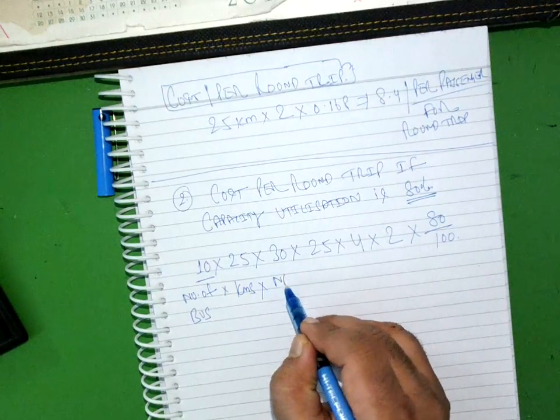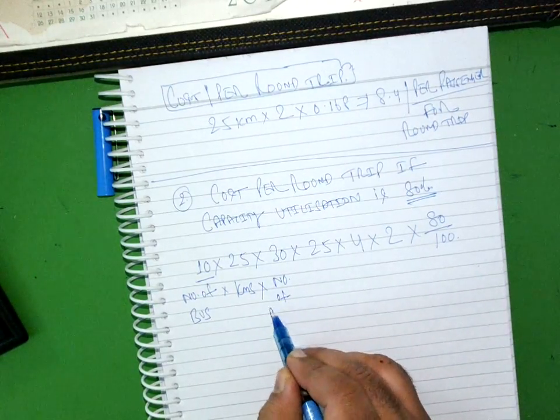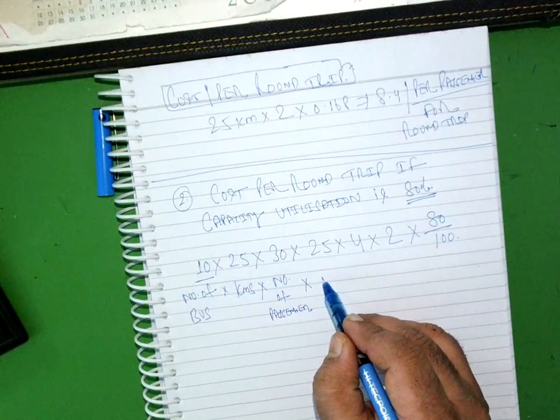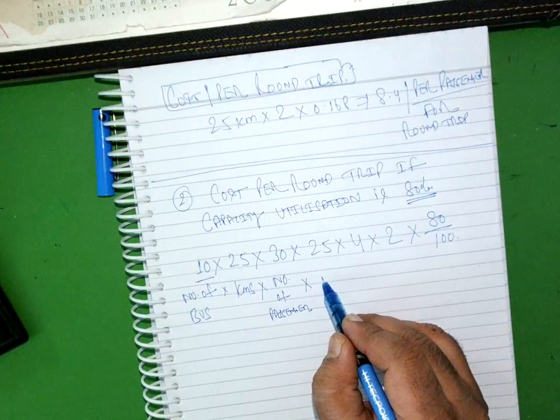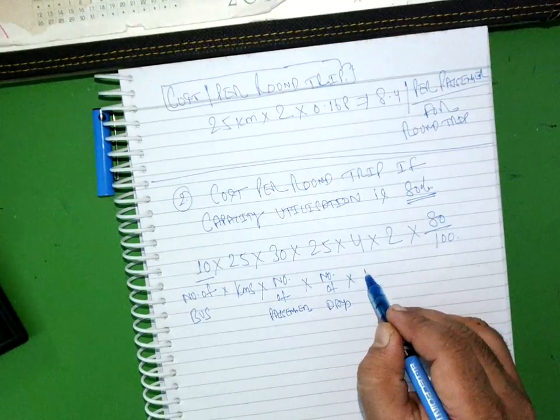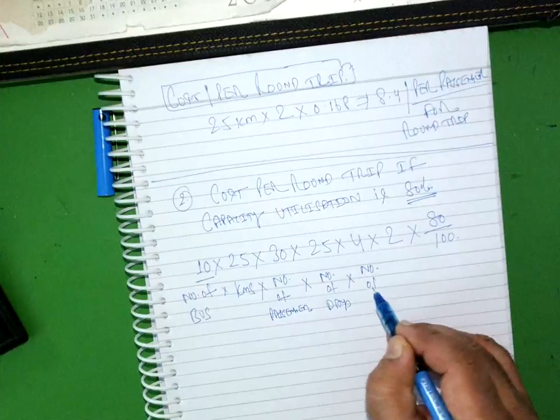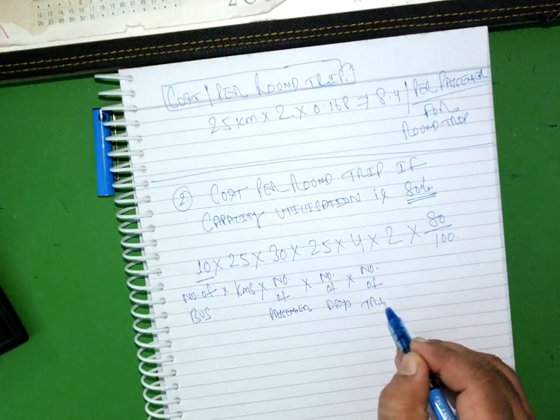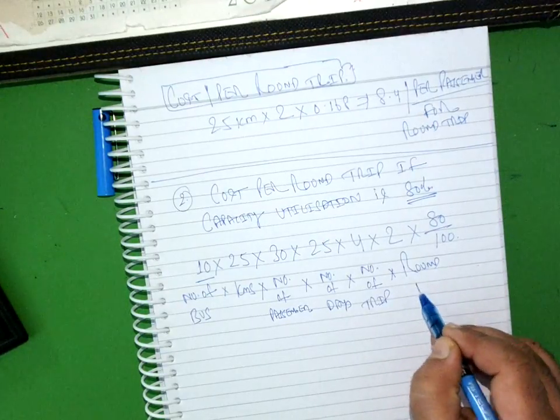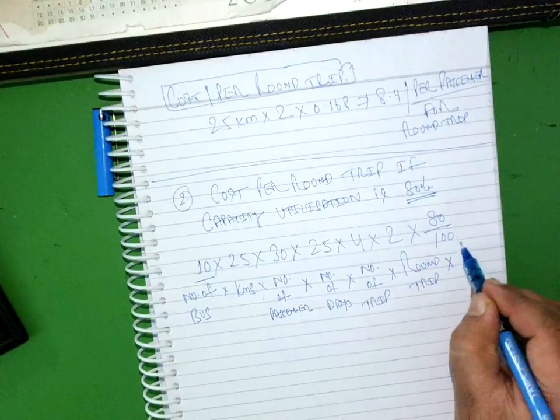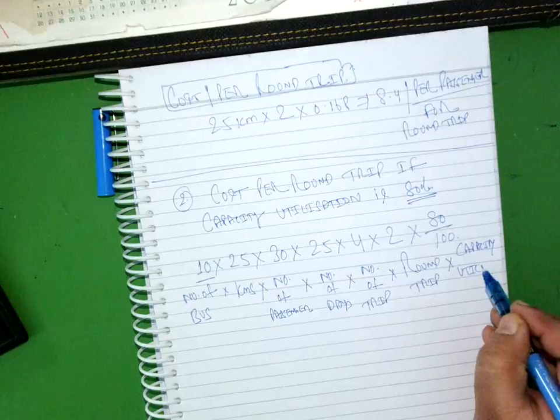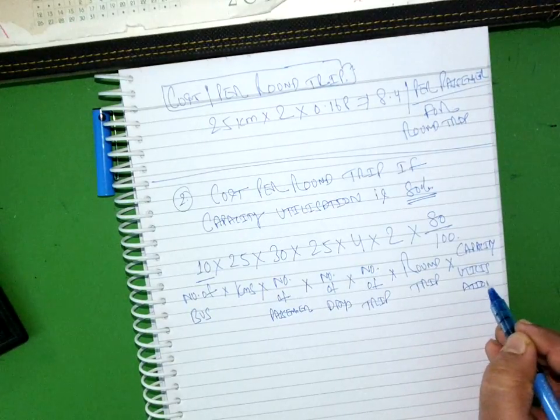Kilometers, number of passengers, 25 is number of days, 4 is number of trips and then round trip. And what is this? Capacity, beauty, utilization.